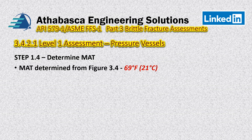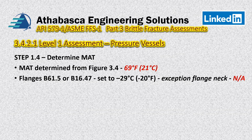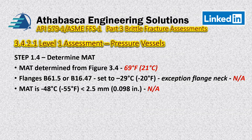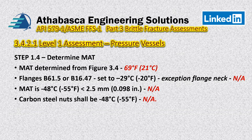In Step 1.4, we have some options. We determined from Figure 3.4 that 69°F or 21°C is our MAT. There are statements about flanges — just as in the codes covered in earlier videos, there's an exception using minus 29°C, with exceptions for forged nozzles and similar items, but in our example this is not applicable. The MAT can also be reduced to minus 48°C if wall thickness is less than two and a half millimeters — again not applicable here. Additionally, if we had steel nuts, we would be limited to minus 48 degrees Celsius.